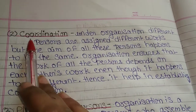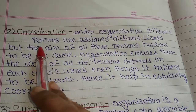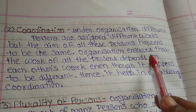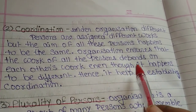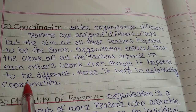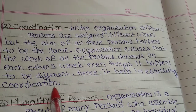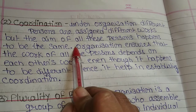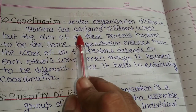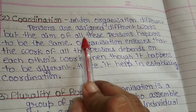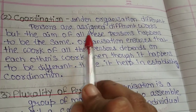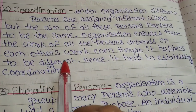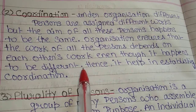The second point is coordination. Under the organization, different persons are assigned different work, but the aim of all those persons happens to be the same. Organizing ensures that the work of all persons depends on each other's work, even though it may be different. Hence, it helps to establish coordination. We do all the work in different, small parts and connect those parts together — this creates coordination among people.